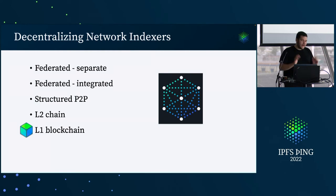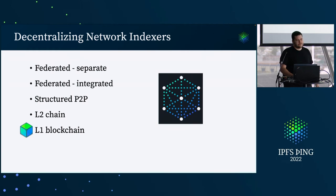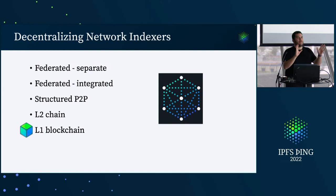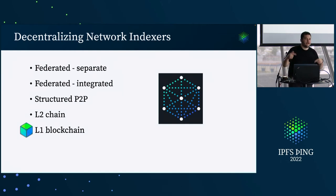These are five possible paths, all with varying degrees of complexity and varying utility over time. It's a good time to discuss these things because we could take many different paths. If people have opinions about the direction they should go, definitely come talk to the network indexer team.